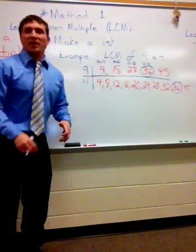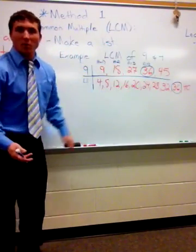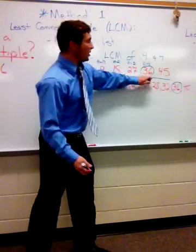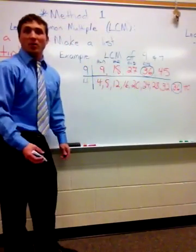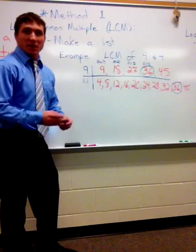Thirty-six, this is a common multiple and it is the lowest of our common multiples. So thirty-six is the LCM, or least common multiple, using the list method.